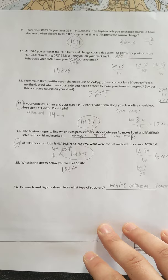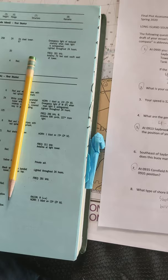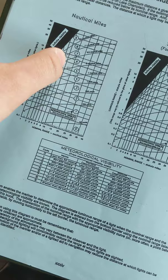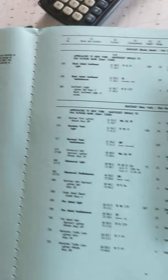For question number 12, to find my visibility, I found the nominal range in the light list to be 14 nautical miles for Horton's Point. I then found the luminous range by taking that 14 nautical miles and bringing it up to just beneath the 5.5 visibility range because our visibility was 5 nautical miles. Bringing that over, I found the range of the light to be 9 nautical miles.